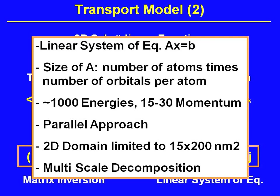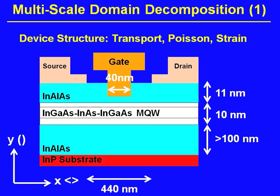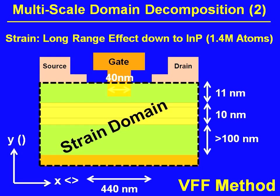We have a 2D domain that is roughly fifteen by two hundred nanometers, and therefore we need a multi-scale decomposition scheme. The full device is actually four hundred forty nanometers long — longer than we can do transport in. The device consists of indium aluminum arsenide, indium gallium arsenide, indium arsenide, indium gallium arsenide, and indium aluminum arsenide layers. We know that system is strained and strain is long range, so we need to compute the strain. We do that in NEMO using a 1.4 million atom Keating valence force field calculation.